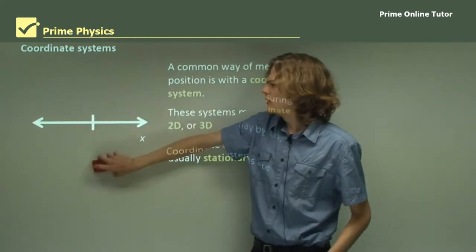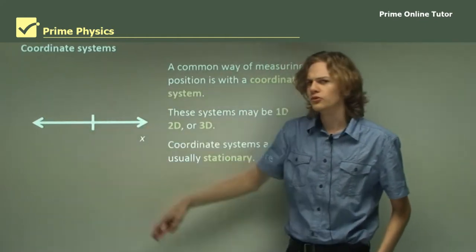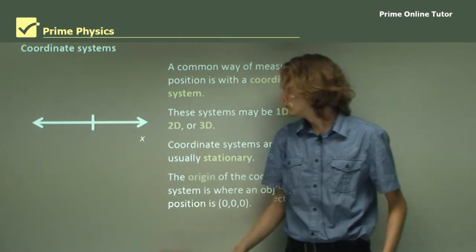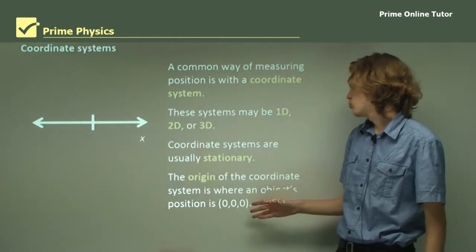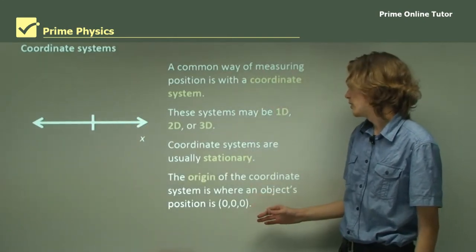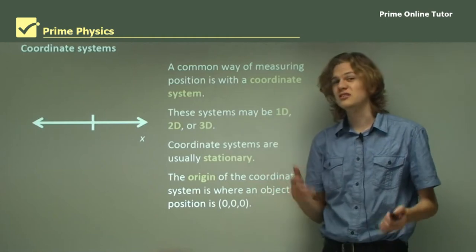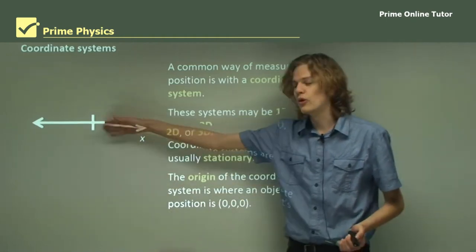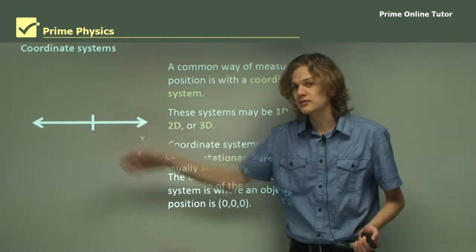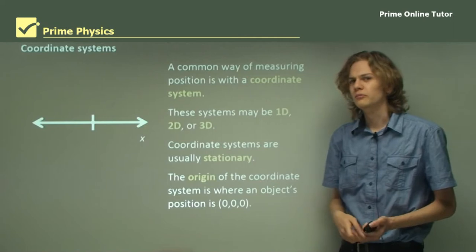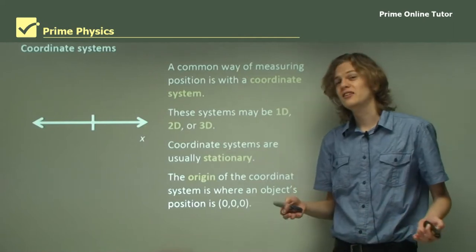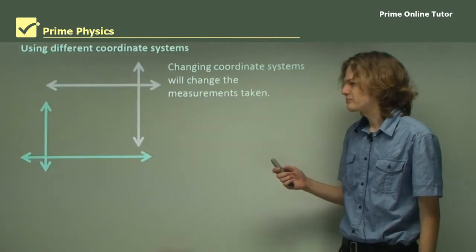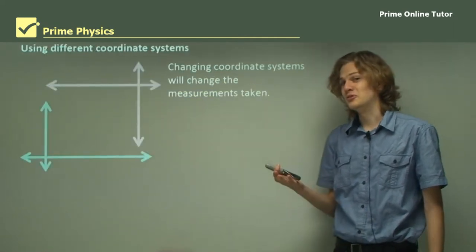So where do we say is the middle of the coordinate system? The origin of a coordinate system is where an object's position is (0, 0, 0) — right in the middle of the axes. But where do we say that is on the earth? As it turns out, it's pretty arbitrary.